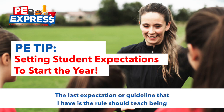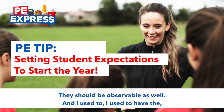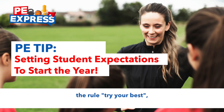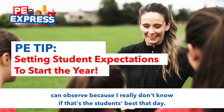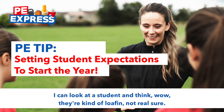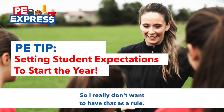The last guideline is that rules should teach being kind, being a good human being, and reflect the teacher's values. They should also be observable. I used to have the rule 'try your best,' but I moved away from that because it's not something I can observe — I really don't know if that's the student's best on a given day. I might think a student is loafing, but I can't be sure, so I don't want that as a rule.